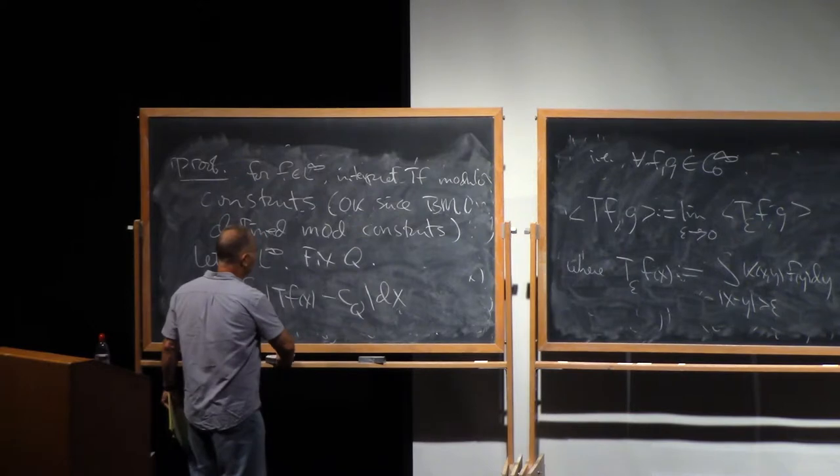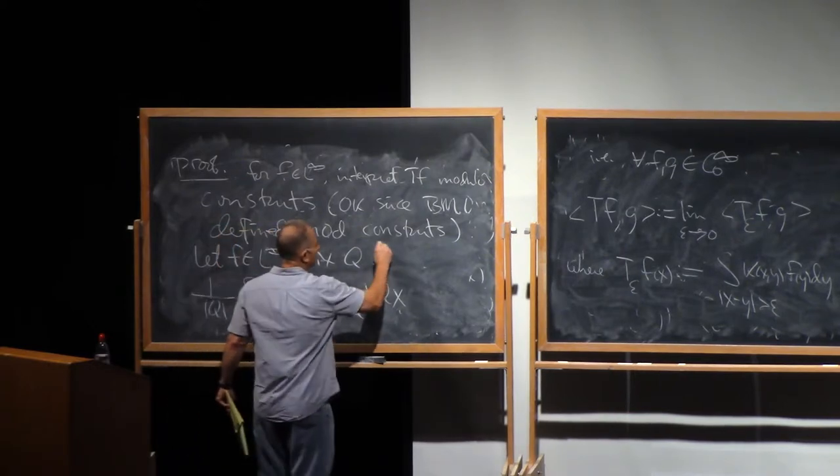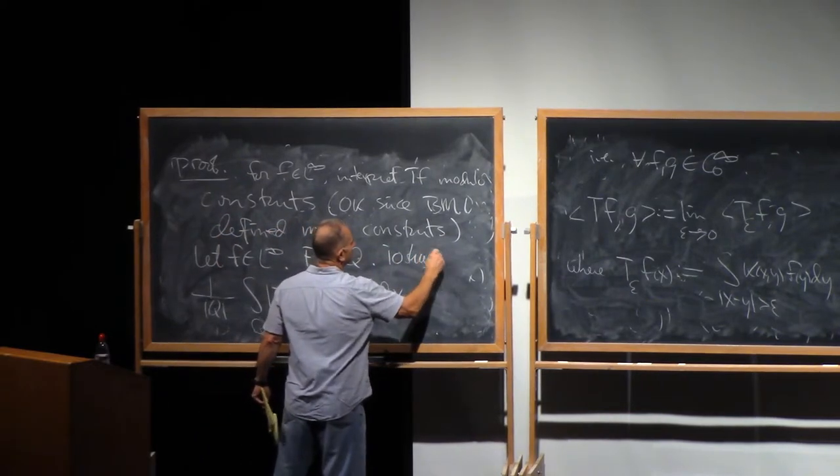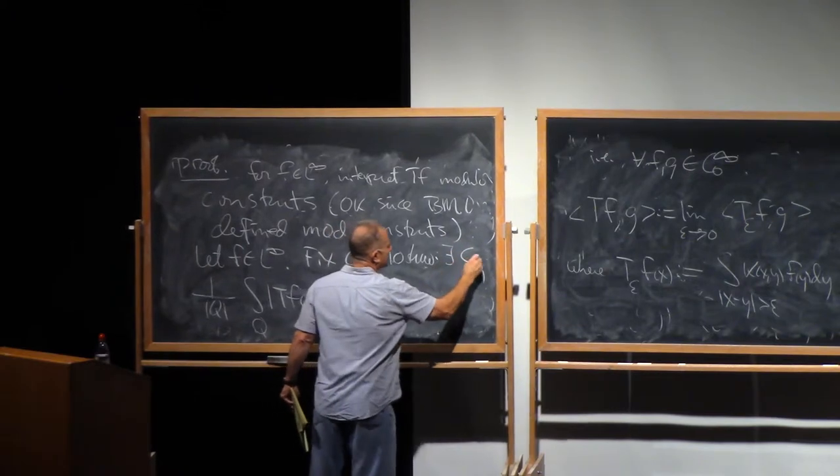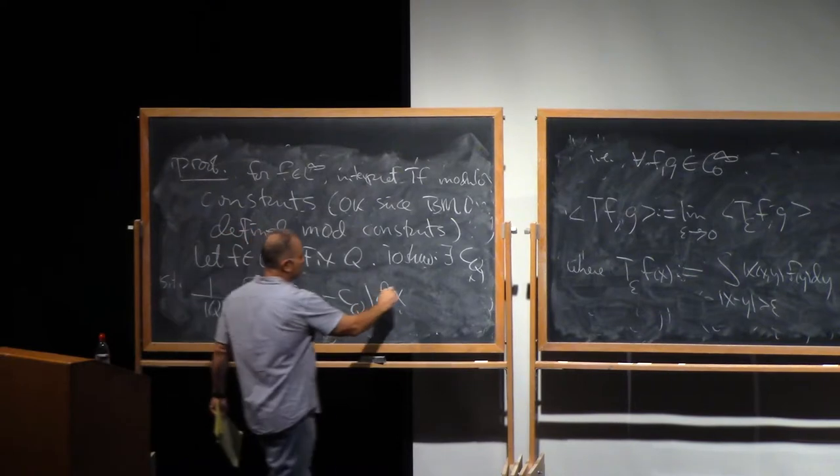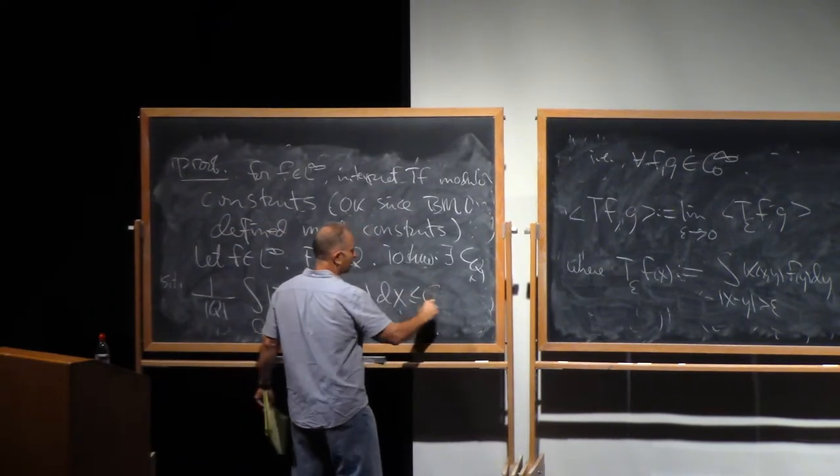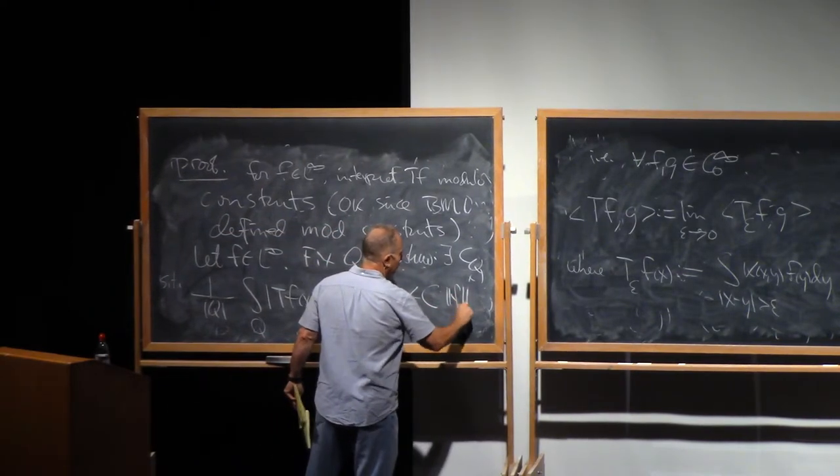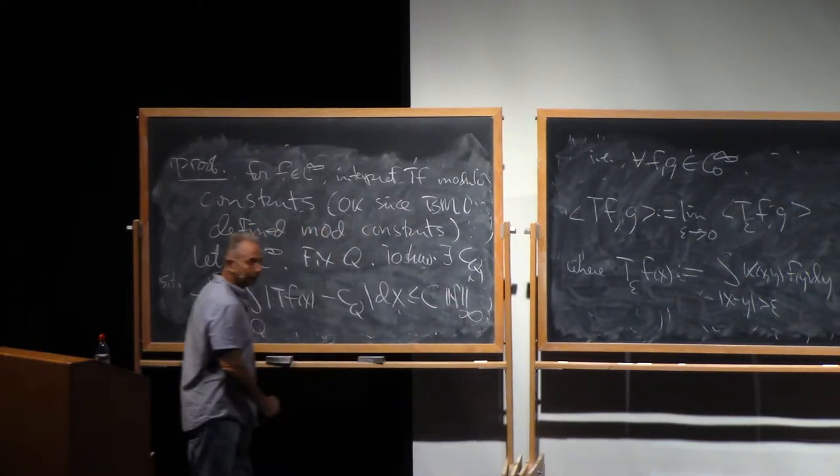We need to show that there exists a constant, depending on Q, such that this is bounded by some uniform constant times the L infinity norm of F.